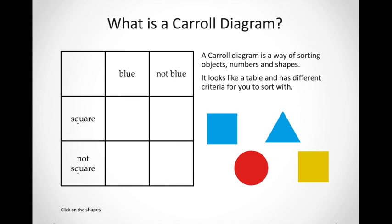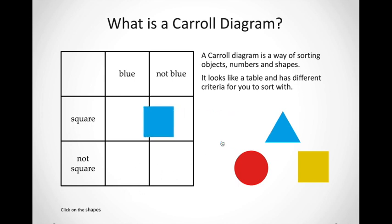Here's another way of a Karel diagram. We're sorting objects not only into shape but into colors as well. Here we have shapes that are blue and shapes that are not blue, and shapes that are square and shapes that are not square. Let's look at this blue square over here. In which block do you think it will fit? It will go into the block that says square and blue. Excellent.